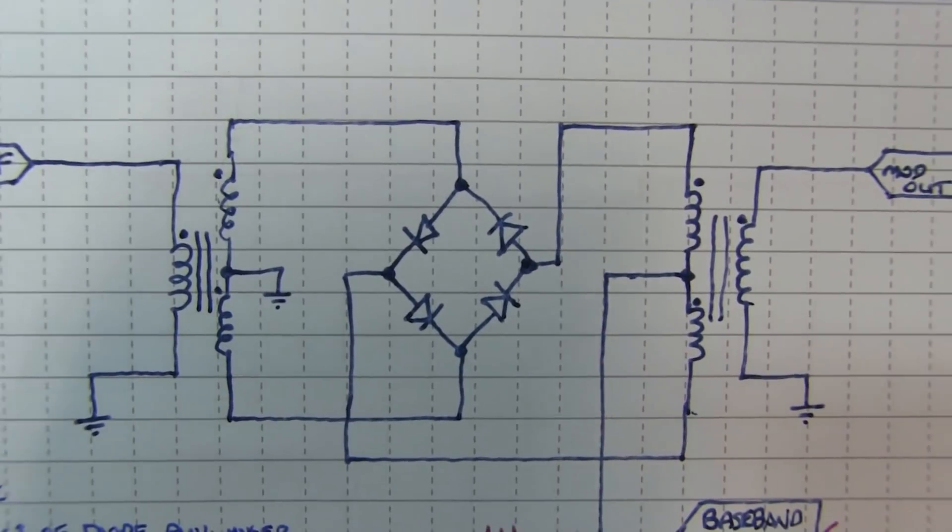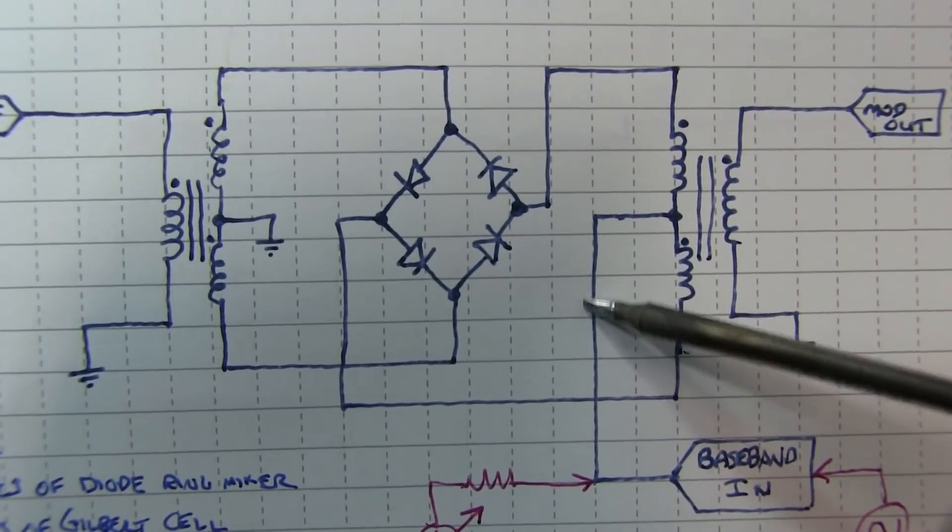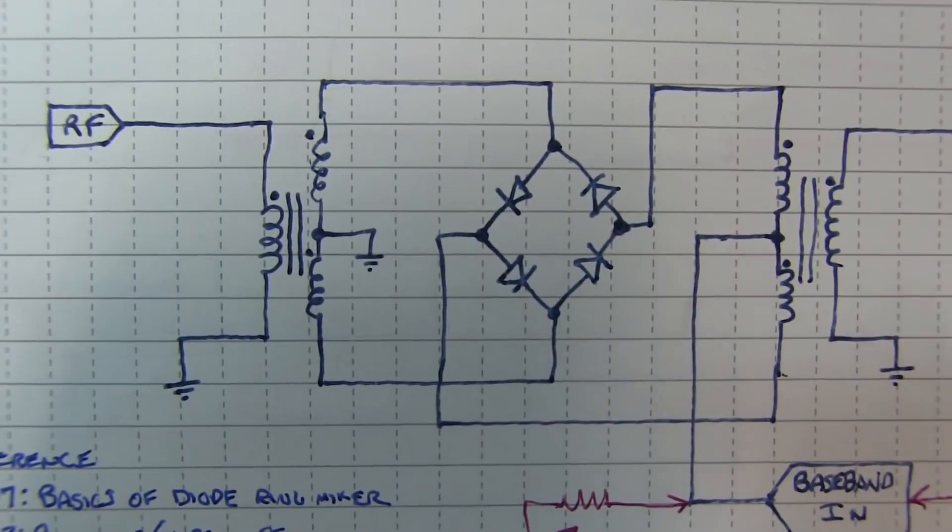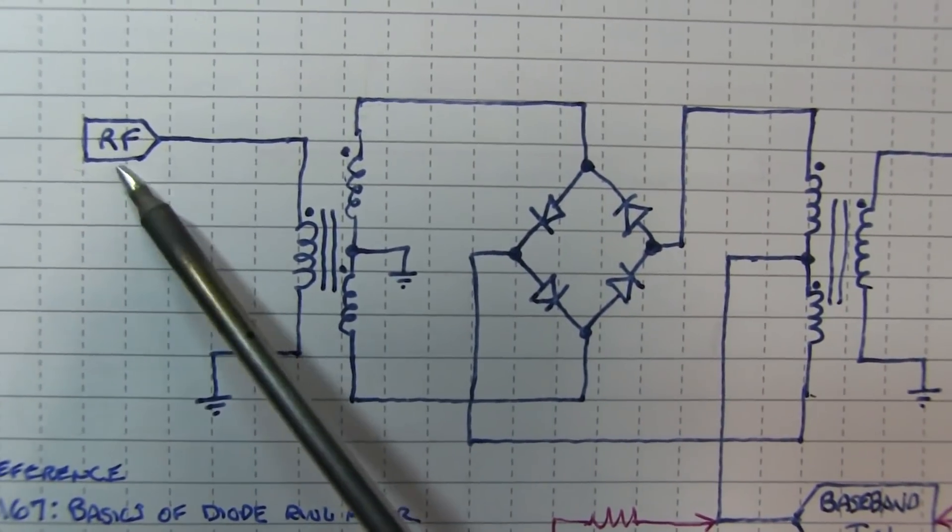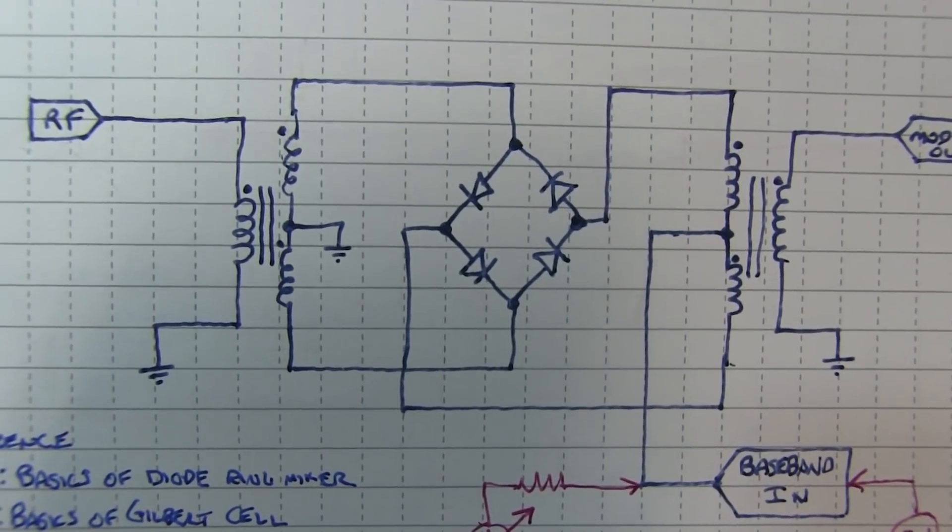So here's your basic diode ring double balance mixer. This is the IF port, and then the RF and LO ports, kind of somewhat interchangeable on either side. I think I labeled it RF over here, other datasheets, you'll see this port labeled LO. But for our purposes here, they're essentially going to be interchangeable.